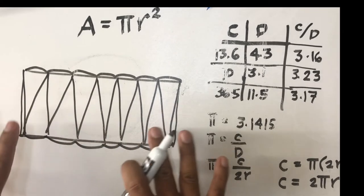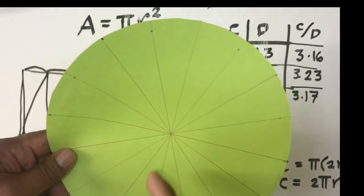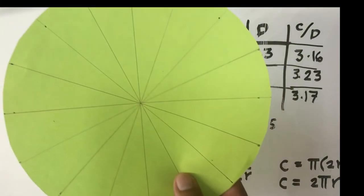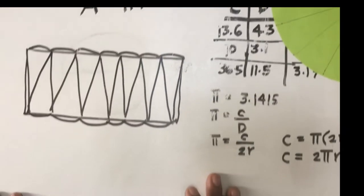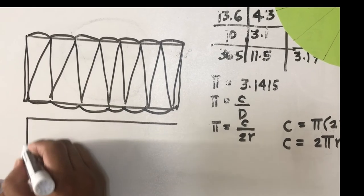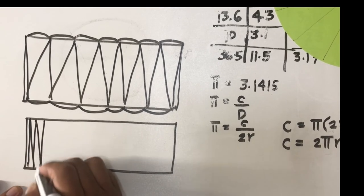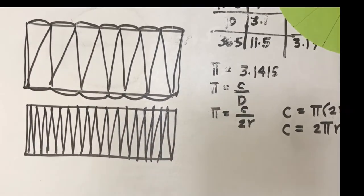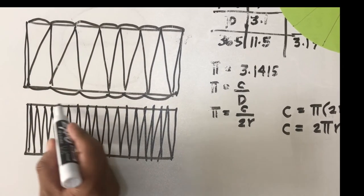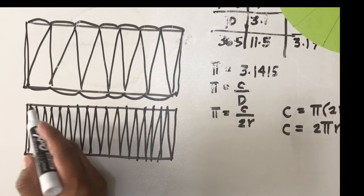So if we can further cut these sectors into very very small pieces, then the limiting shape that this can form if we arrange those sectors alternately like this would be a rectangle. If we cut them into very very small pieces, then the curve would appear to be more straight because the sectors would be very very small.